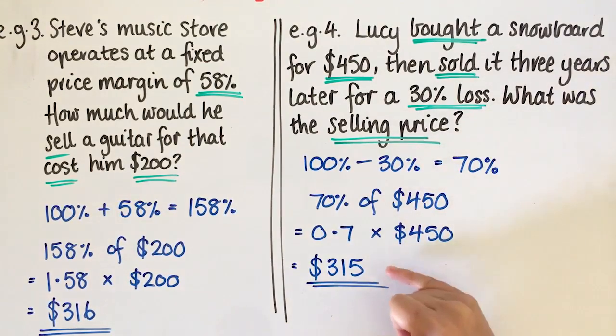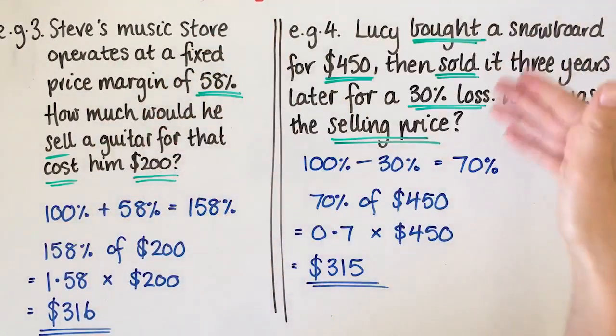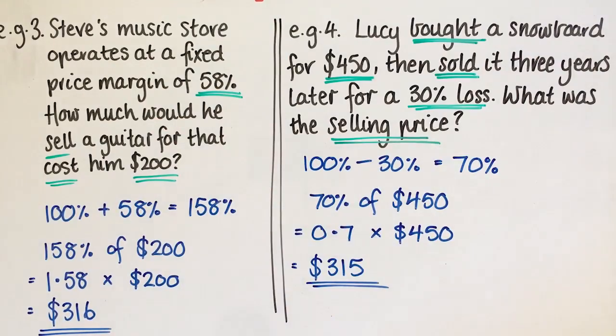So Lucy sold her snowboard for $315, because she made a 30% loss. So our answer is going to be smaller than what she started with, compared to Steve, whose answer was going to be bigger, because he's at a shop, he's trying to make money at a shop, whereas Lucy bought it and then sold it second hand.